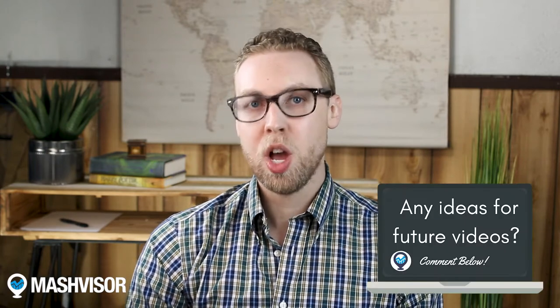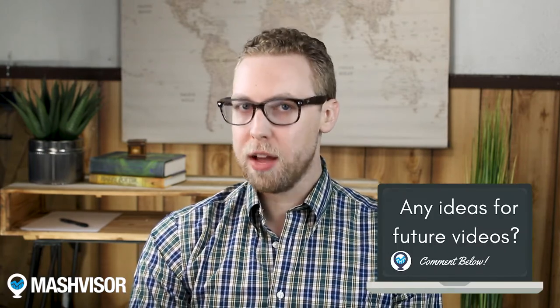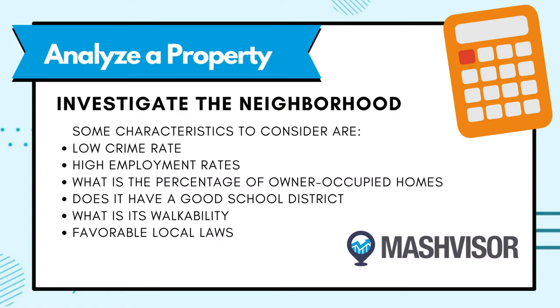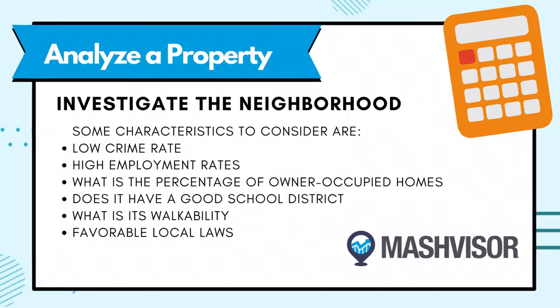If you've determined that you're looking in a profitable market, the next stage in your analysis is to reduce your hunt to a micro level and make sure that the neighborhood of a potential buy meets your personal goals and standards. Some characteristics to consider are low crime rate, high employment rates, the percent of owner-occupied homes — owner-occupied neighborhoods are notoriously nicer and better kept than renter-only areas — a good school district, walkability, and favorable local laws. Mashvisor has a heat map tool where you can see the viability of an area and compare it with other locations.